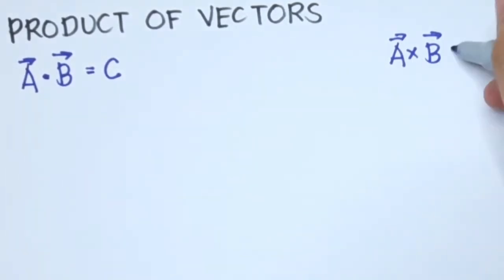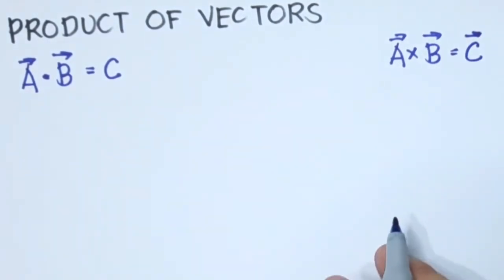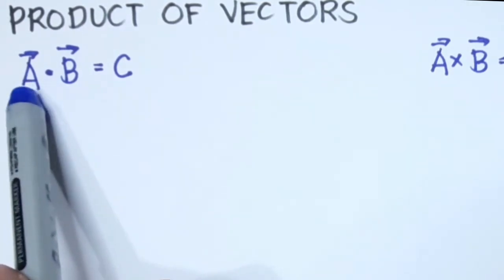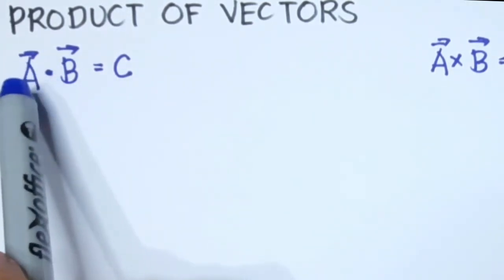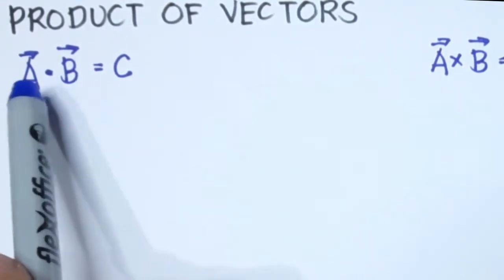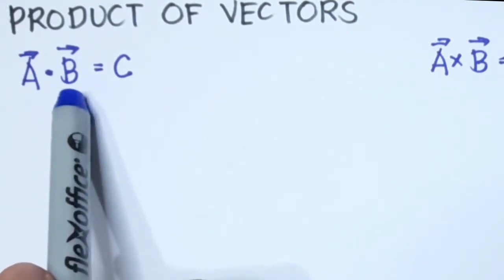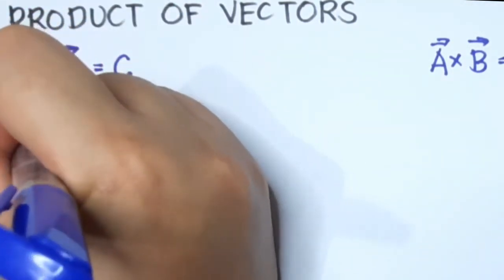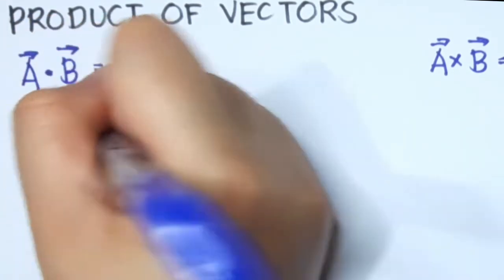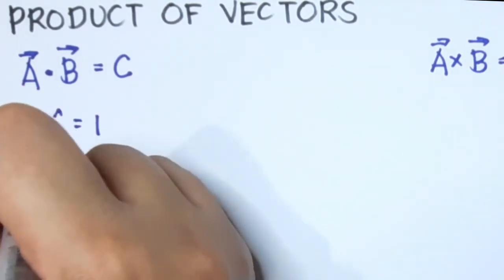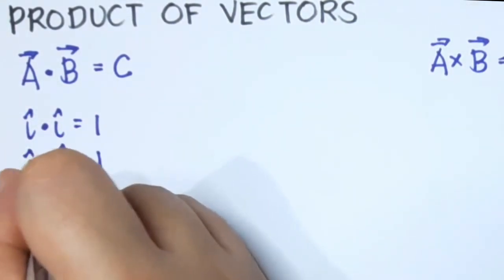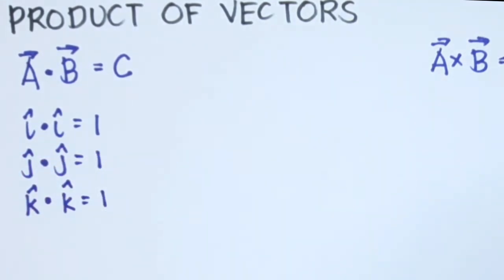The property of the scalar product is: if we multiply a vector with another vector of the same direction, the answer is one. For example, vector a has a component of i-hat multiplied by a vector that also has a component of i-hat — the answer is one. So i dot i equals one, j dot j equals one, and k dot k equals one.